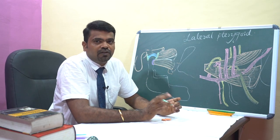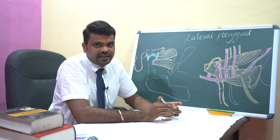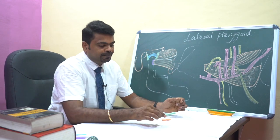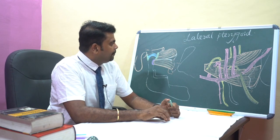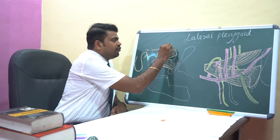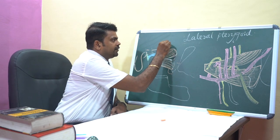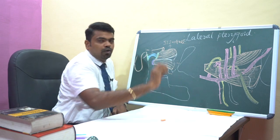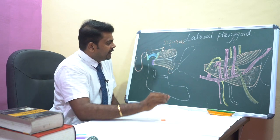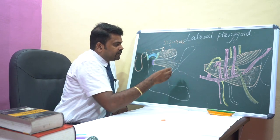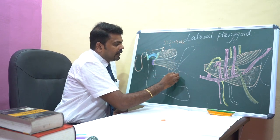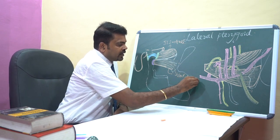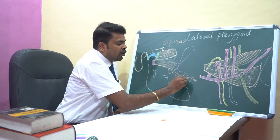Our lateral pterygoid muscle consists of two heads — an upper head and a lower head. The upper head arises from the infratemporal surface of the greater wing of the sphenoid bone, whereas the lower head arises from the lateral surface of the lateral pterygoid plate.